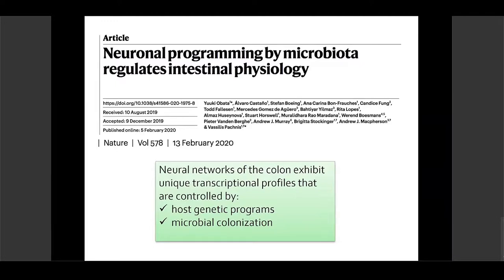At the end of the study, feeding bacteria from normal-flora mice to the germ-free mice showed changes in how the transcription factor activated and how colonic transit time improved. This demonstrates that intrinsic neural networks of the colon exhibit transcriptional profiles affected by a combination of the host's genetic program and microbial colonization. This study only examined normal healthy gut flora in mice, not dysbiosis, so ongoing research continues.